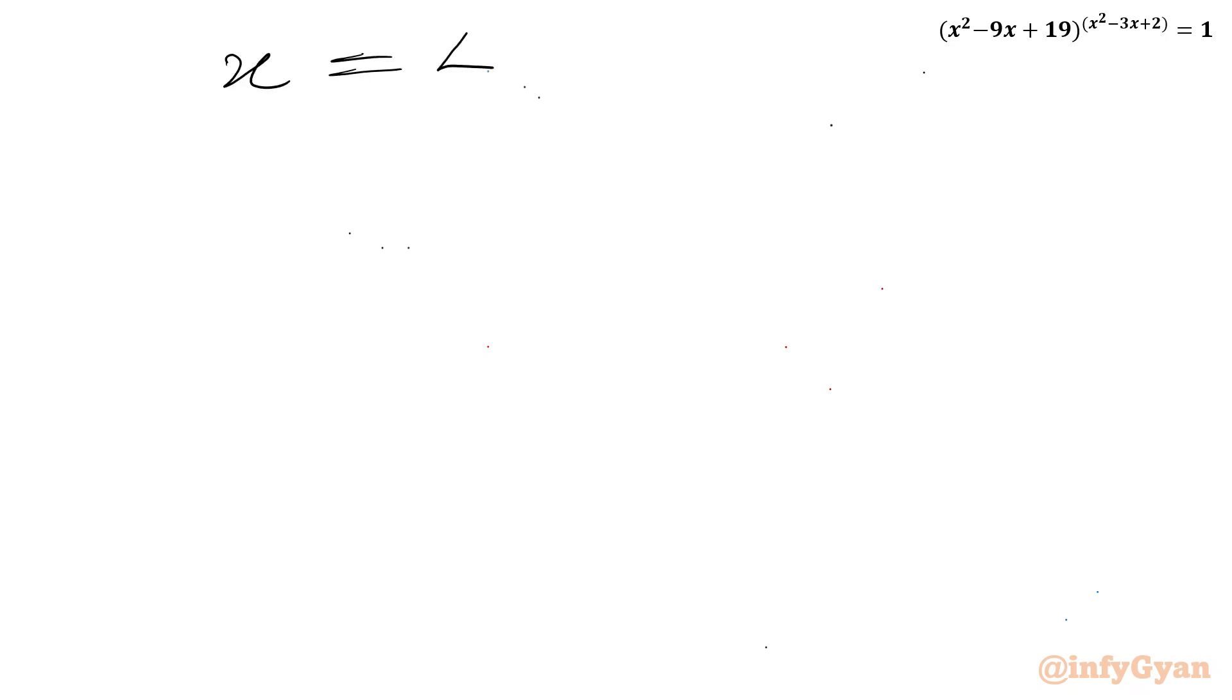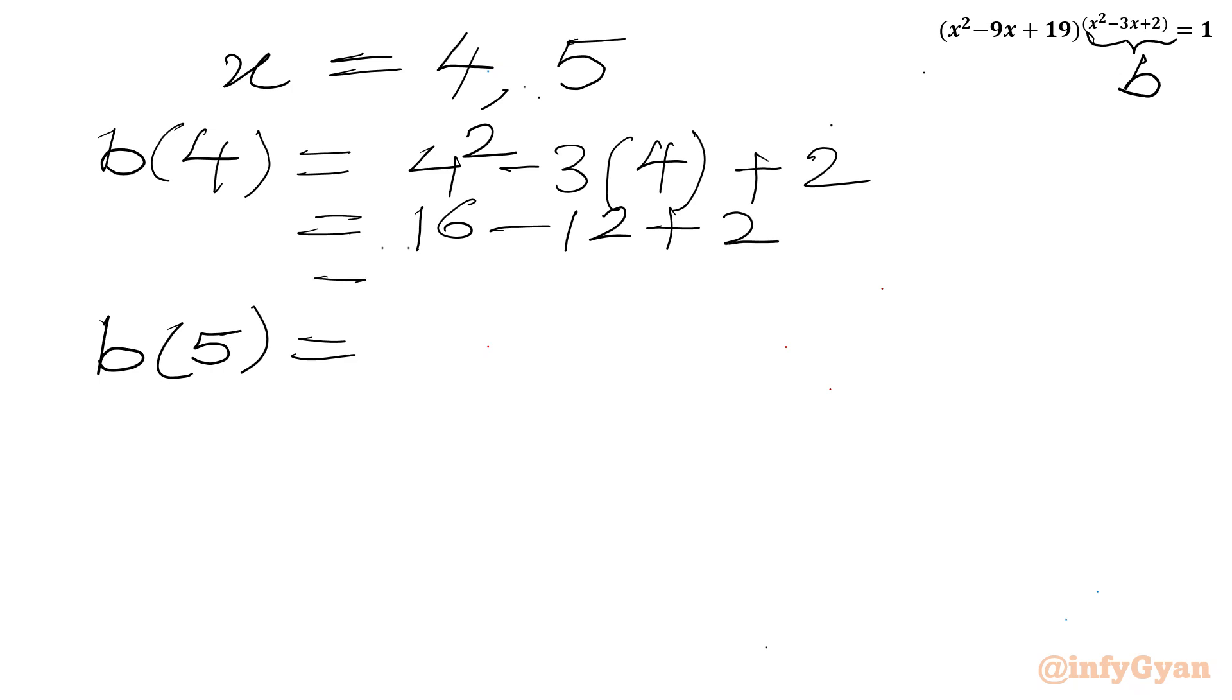So we can write x will equal to 4 and 5. Now we have to make sure power should be even. So I will calculate b of 4. I need to write 4 square minus 3 times 4 plus 2. This will equal to 16 minus 12 plus 2, so 18 minus 12, this is 6, and 6 is even number. So accepted. So 4 is accepted x value.